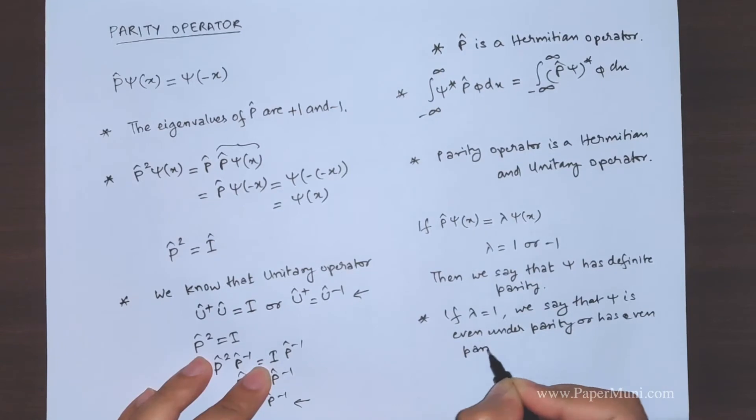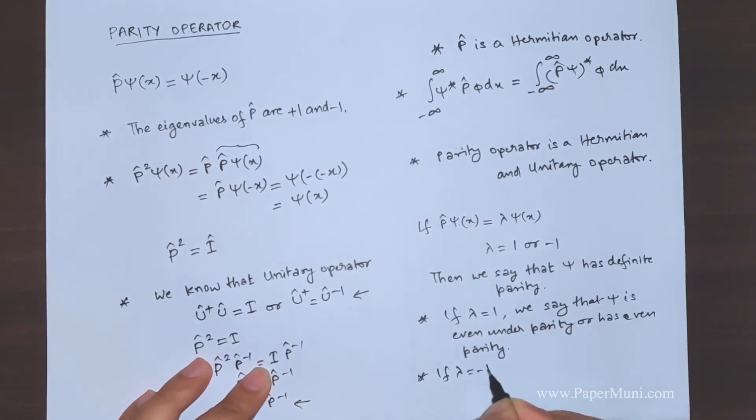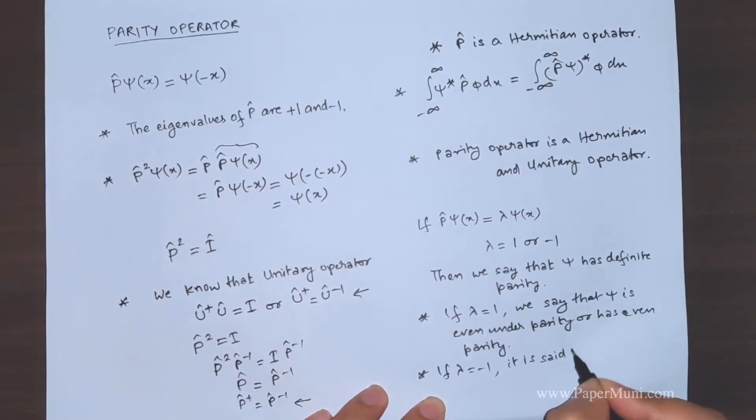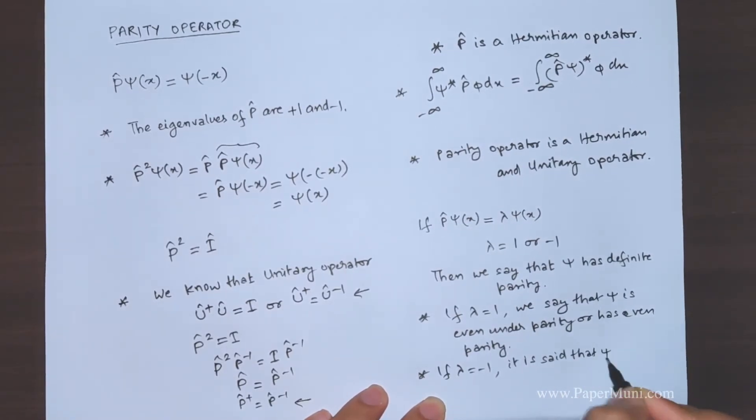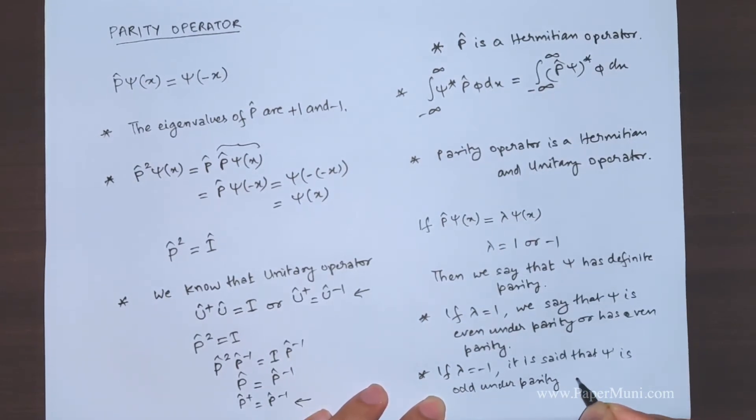If λ is equal to minus one, it is said that ψ is odd under parity, or has odd parity.